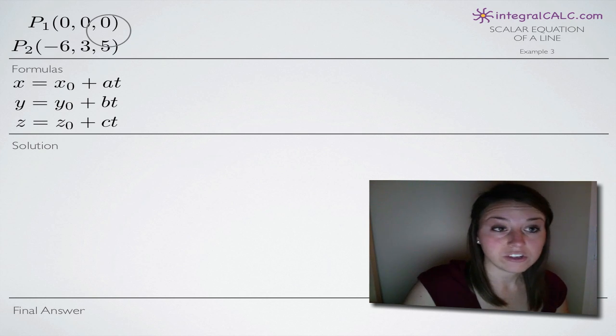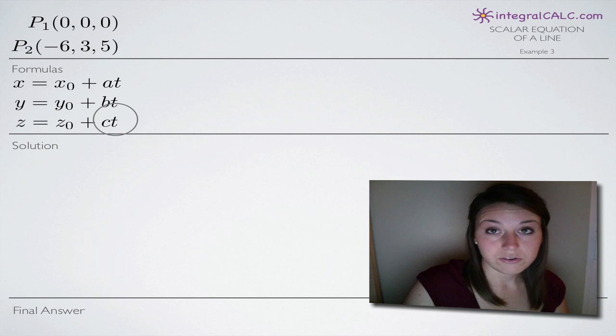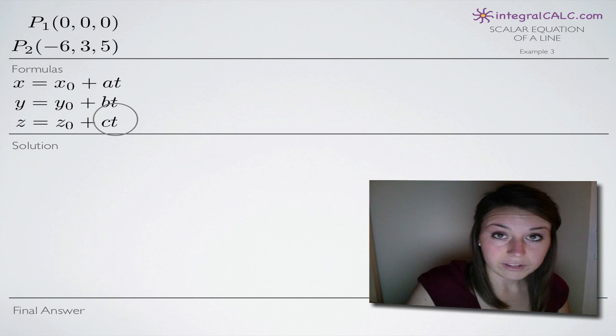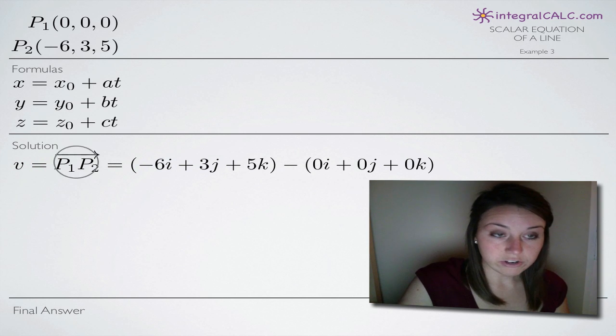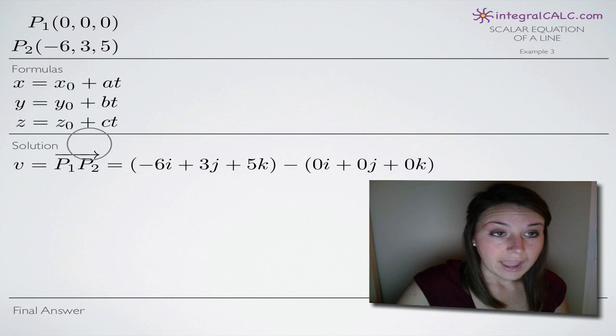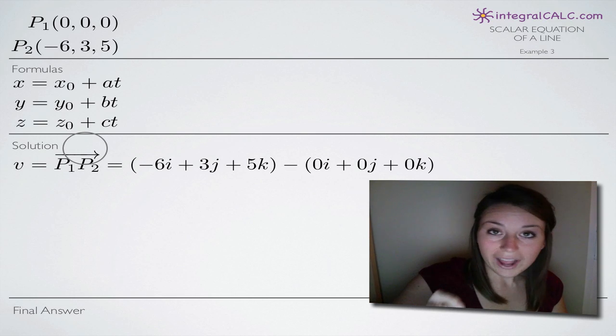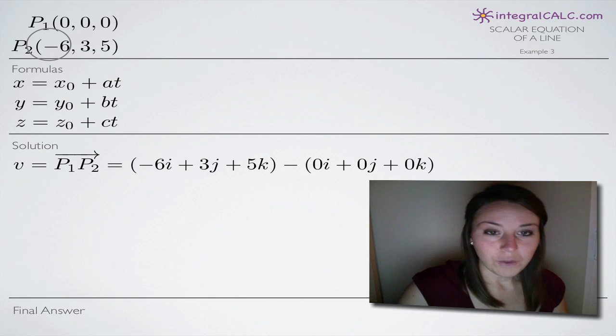Then we'll use the vector and P₁ to find x, y, and z. And the three of those together will constitute our scalar equations and that will be our final answer. So in order to find the vector, this is what we do. We're going to find the vector that starts at P₁ and goes to P₂. And in order to do that, we have to subtract the P₁ values from the P₂ values.